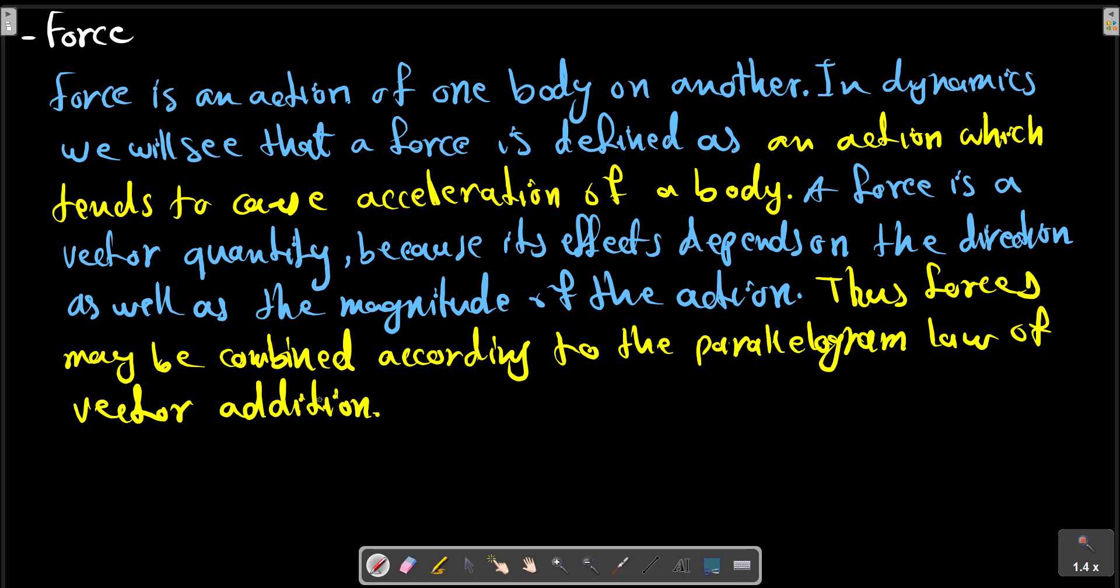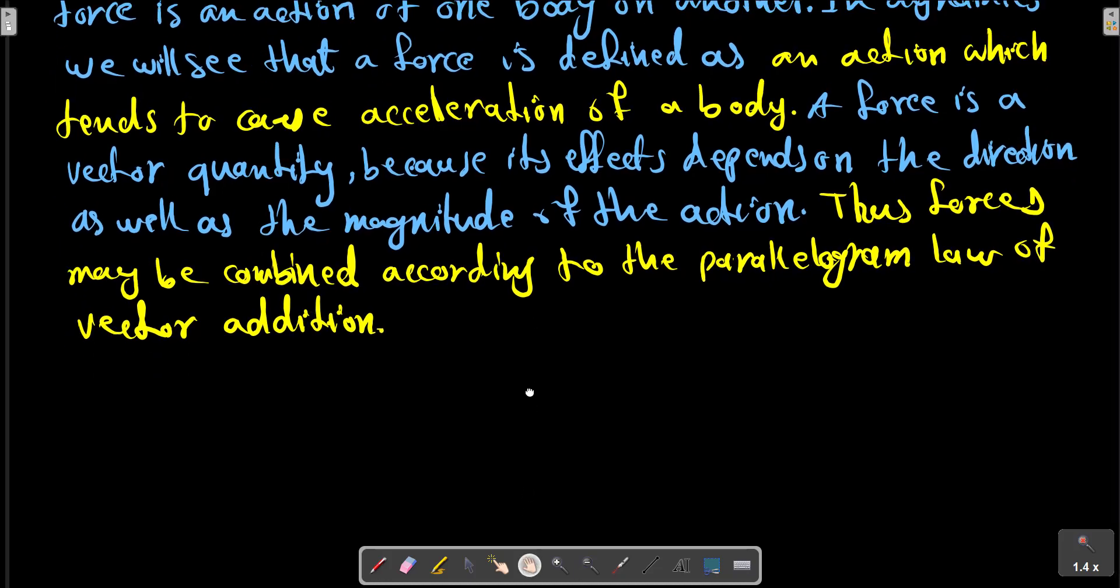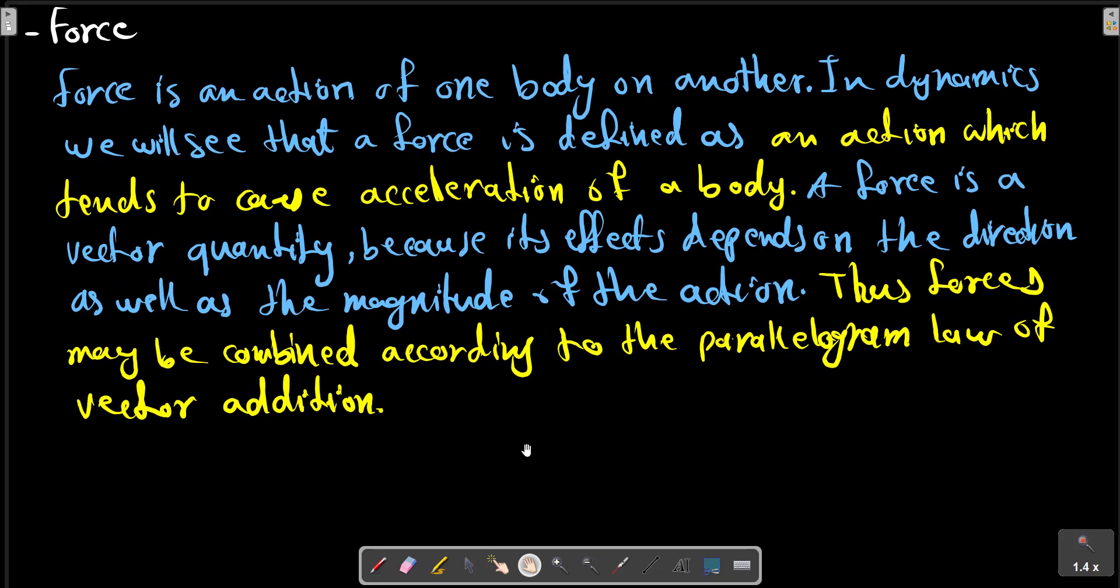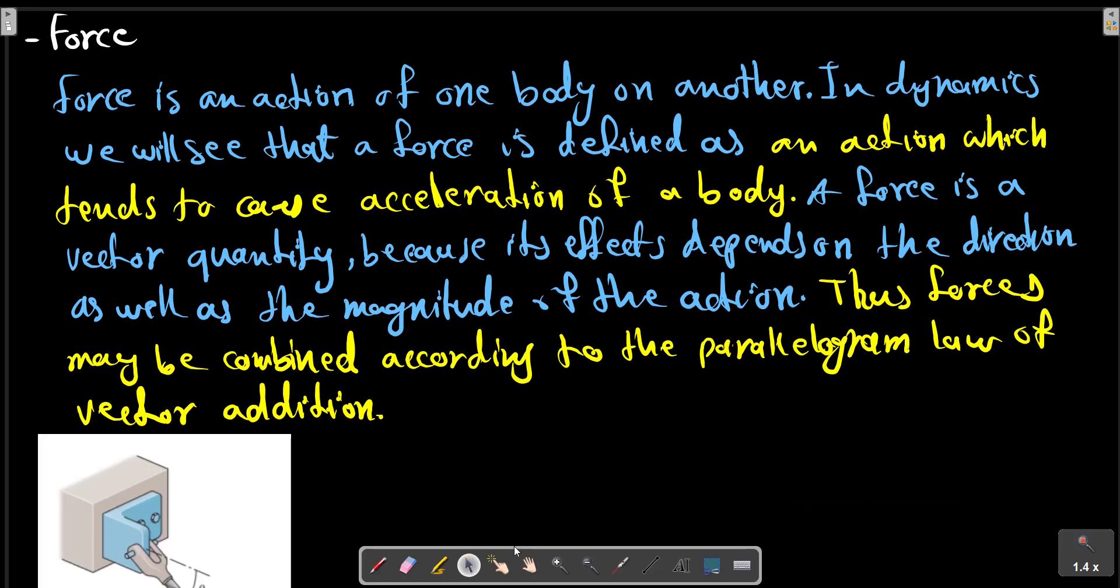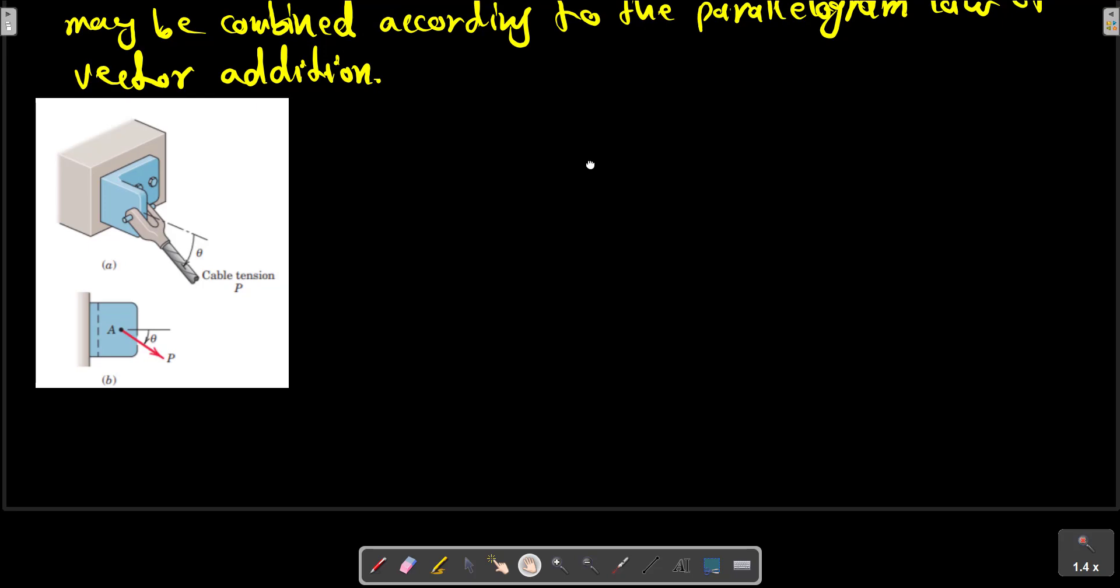The action of cable tension on the bracket in figure 2a, for example, in this picture we have an example of force. The cable tension on the brackets is represented in the side view as the force vector P.